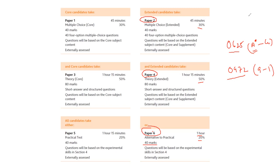The difference between Paper 5 and Paper 6: Paper 5 is a practical where you actually perform the experiment, whereas in Paper 6 you don't perform the experiment — you answer questions related to experiments on paper, like measuring with a ruler, plotting graphs, or writing results. Most schools in our region don't provide the facility to perform experiments, so most students select Paper 6.